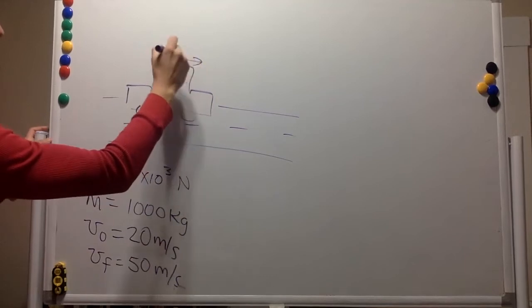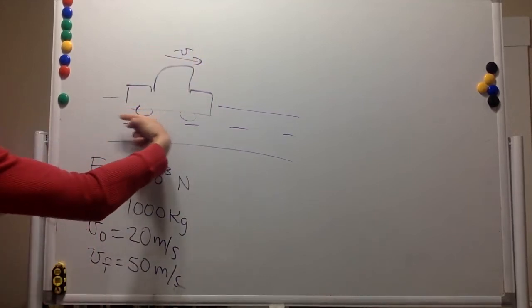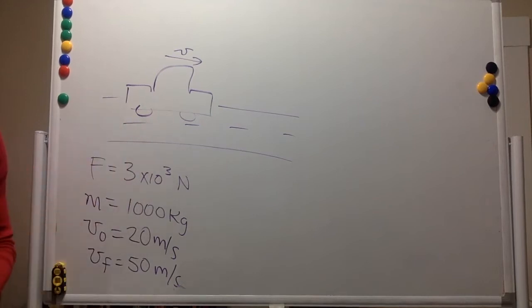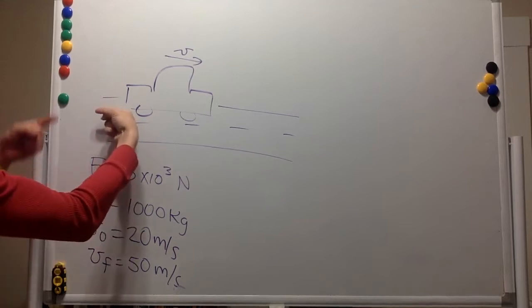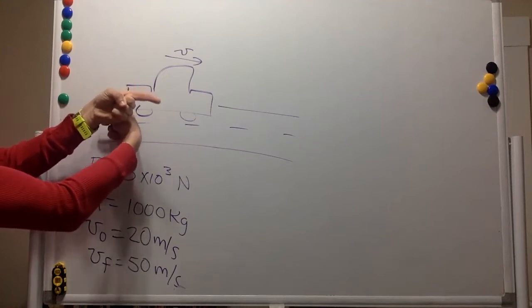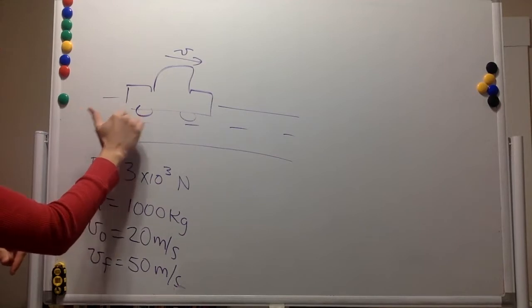The wheels exert a force on the road in this direction, let's say that the car is moving in this direction, it will be towards the back. And because to every action there is a reaction, there is another force that is produced in the opposite direction of equal magnitude, but acts on the other object, on the wheel.